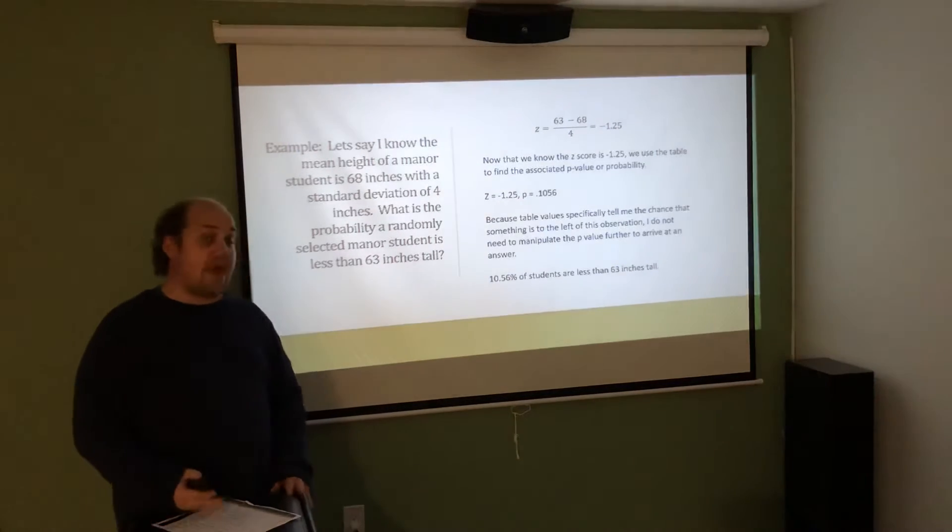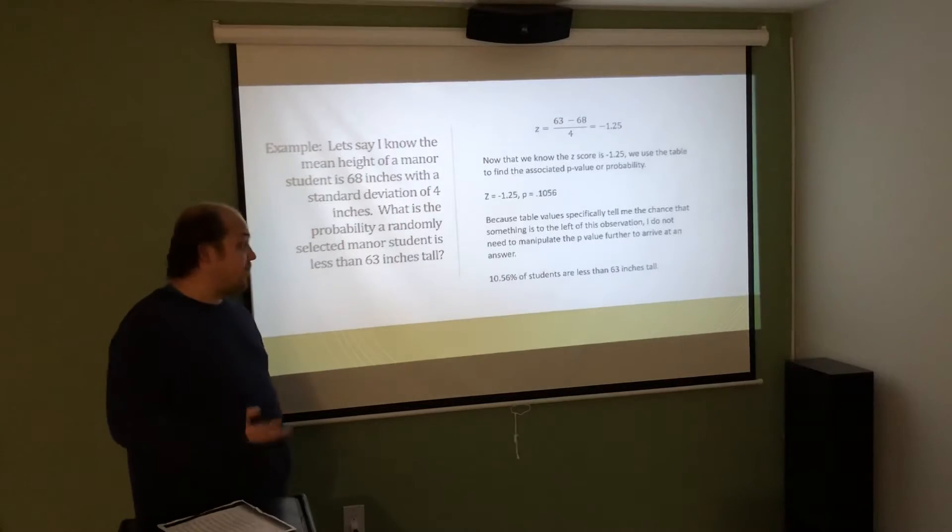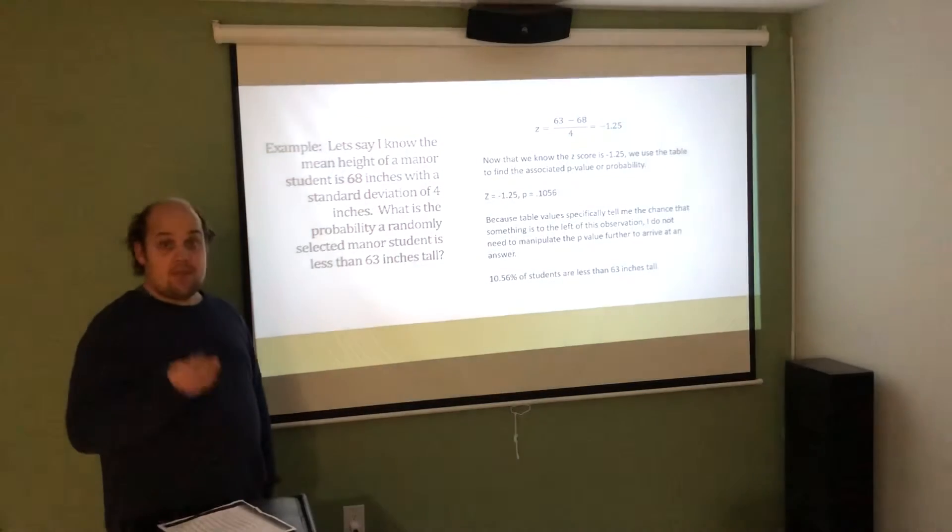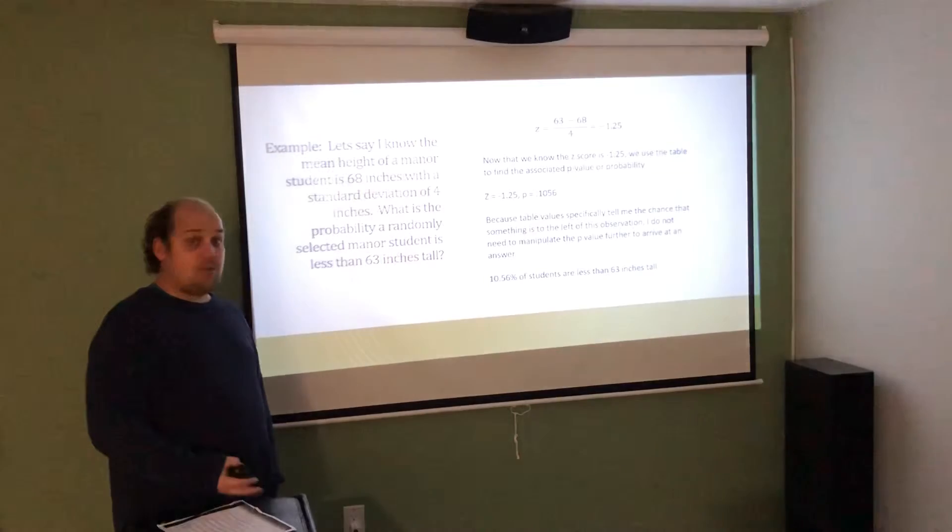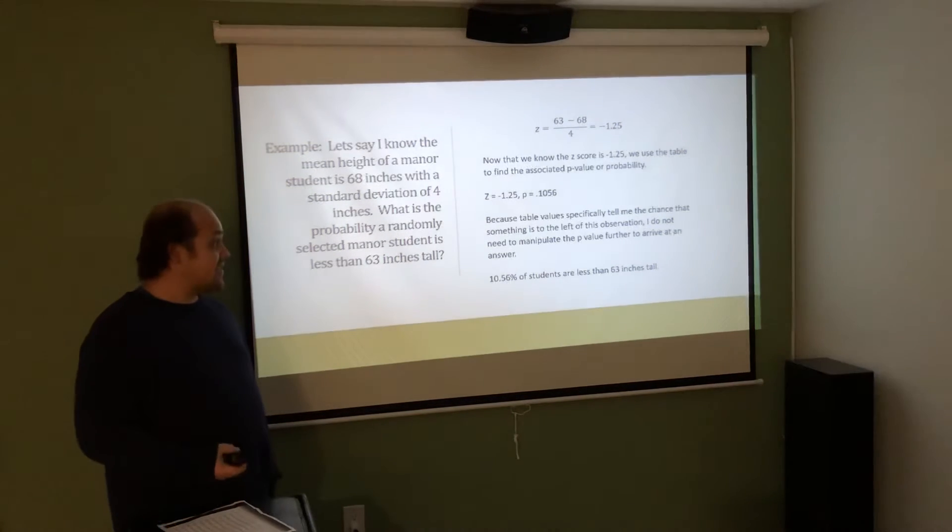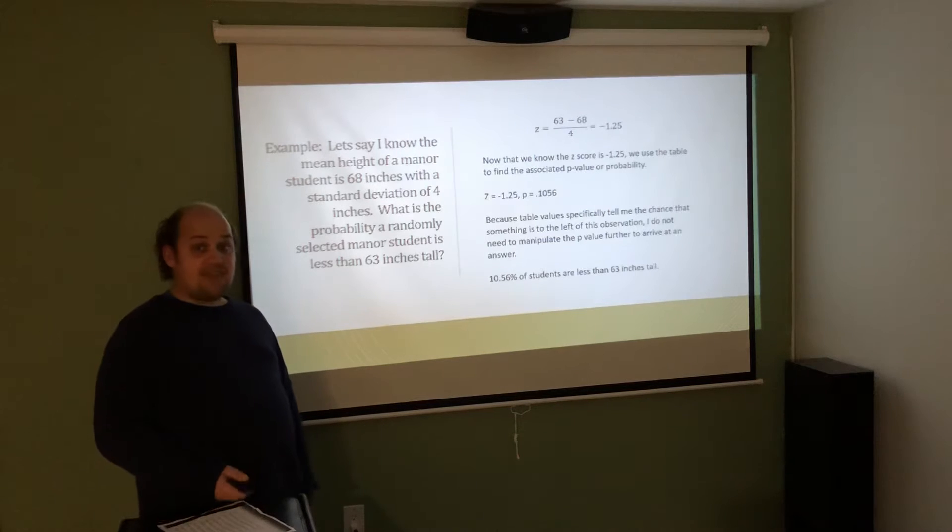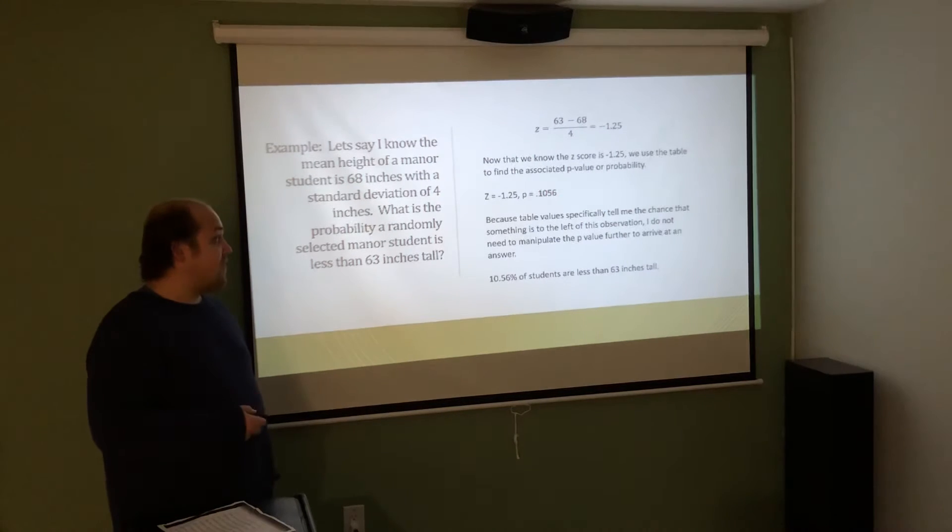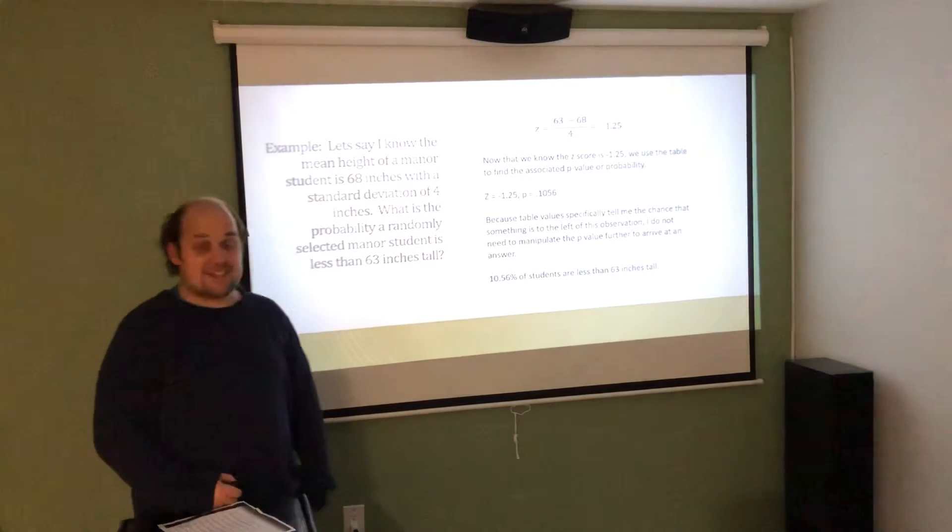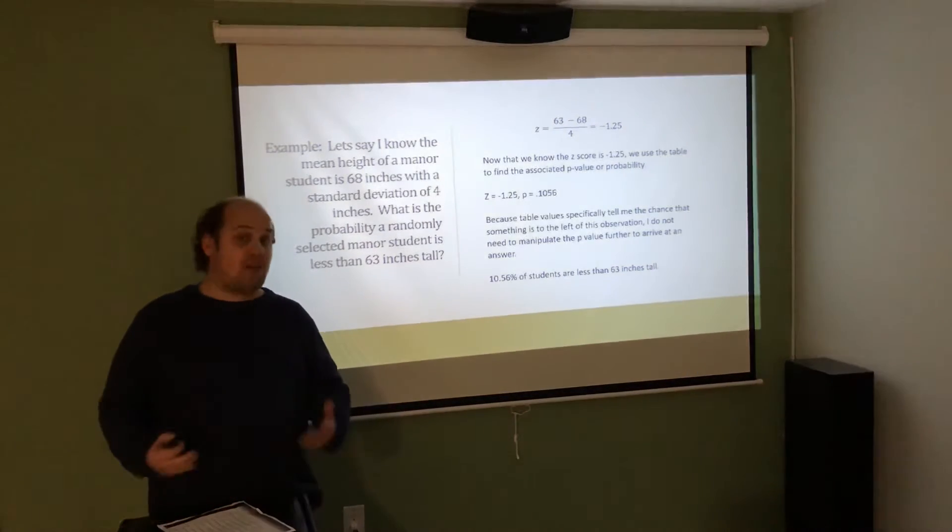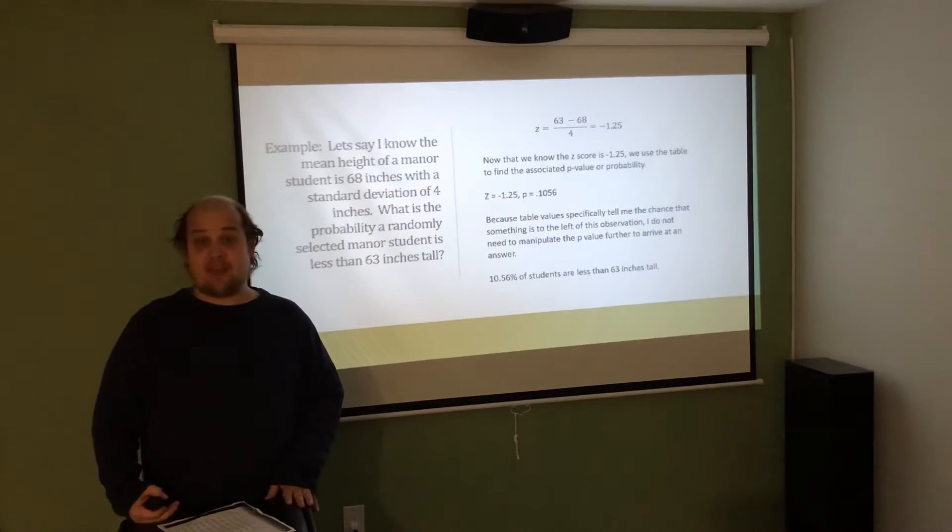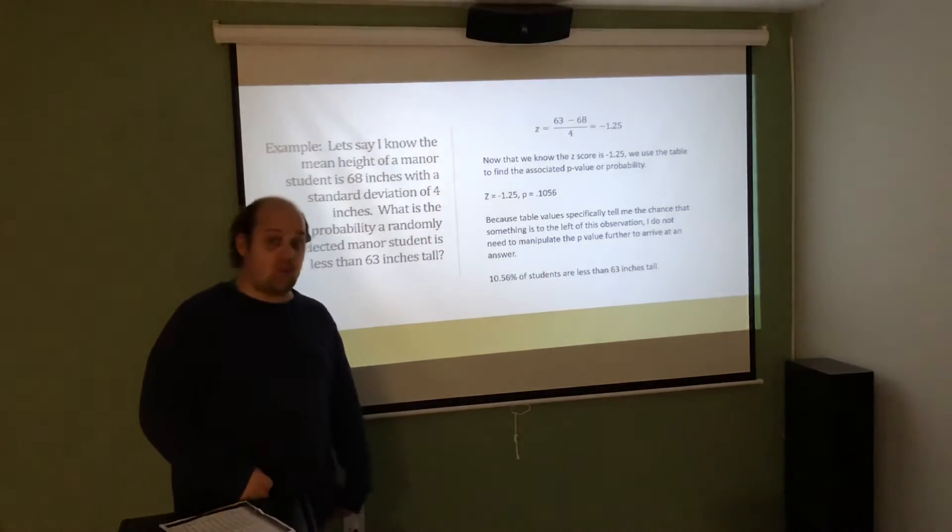I need to look back and say, did it ask me for less than to the left of, more than to the right of, or between two values? Since it asked me to find less than 63 inches tall, I can use the exact table value. 0.1056 as a probability really means 10.56% of students are less than 63 inches tall, provided that I had the proper mean and standard deviation of 68 inches and 4 inches.